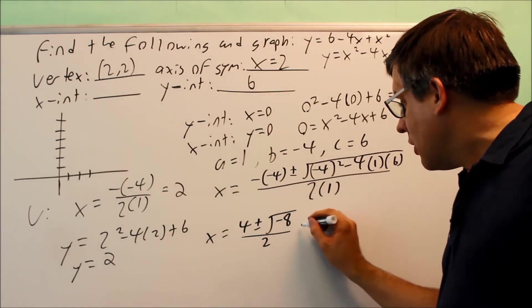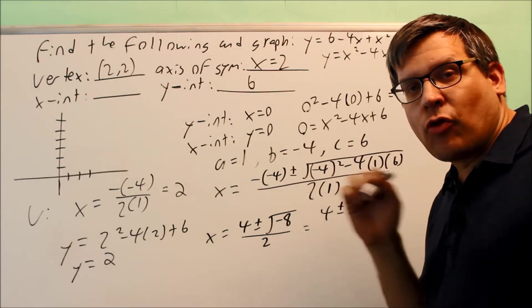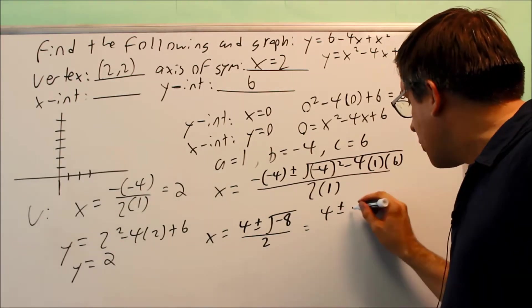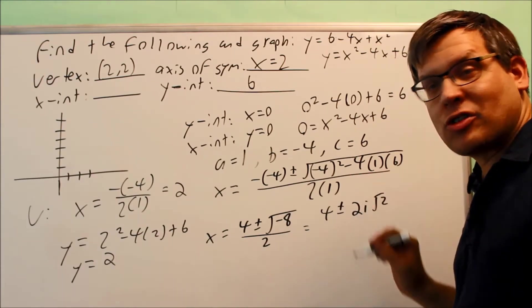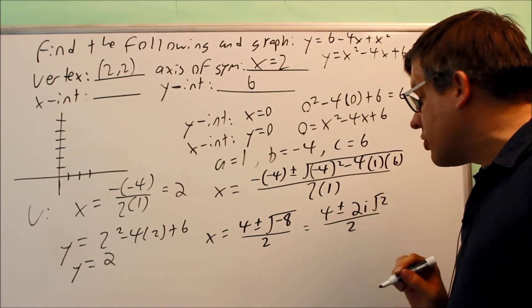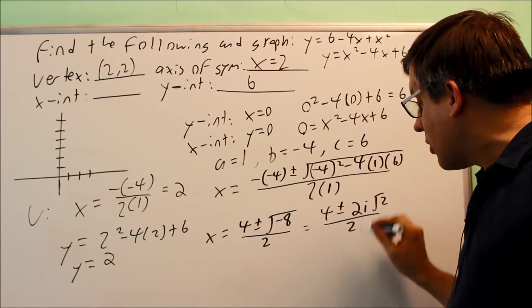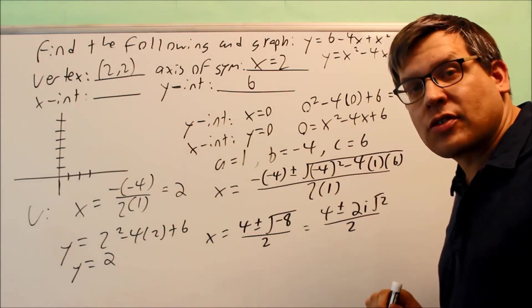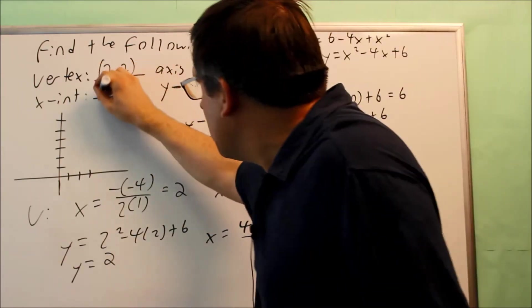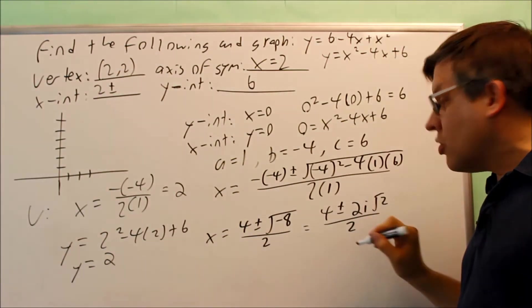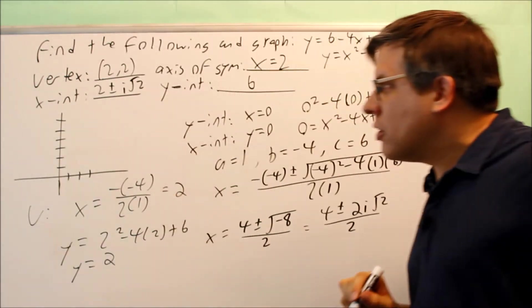We have talked about how you simplify that with i, so we are going to do that on this one. So we do 4 plus or minus. Now 8 can be written as 4 times 2. The square root of 4 is 2, which means that a 2 will come outside of the radical. So I get 4 plus or minus 2i square root of 2, all over 2. Now you want to separate this by dividing these two numbers to get our final answer for the x-intercept. You're going to get 2 plus or minus i times the square root of 2.